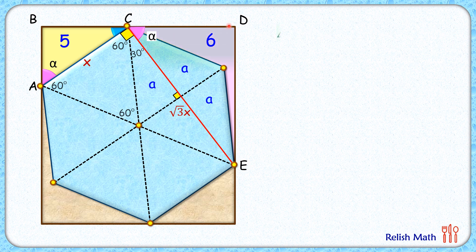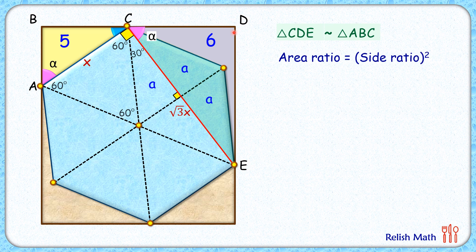So we can say that triangle CDE and triangle ABC are similar by angle-angle-angle similarity. Triangle CDE has alpha and 90 degrees, and triangle ABC also has angle alpha and 90 degrees. If two triangles are similar, the ratio of their areas is the square of the ratio of their corresponding sides. The ratio of sides CE to AC is (√3·x) to x, which simplifies to √3 to 1.